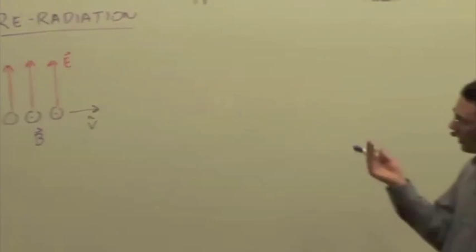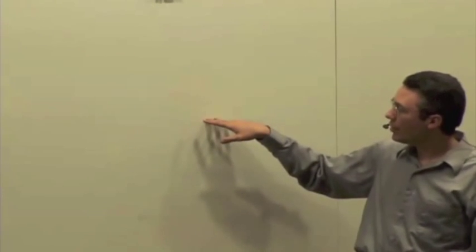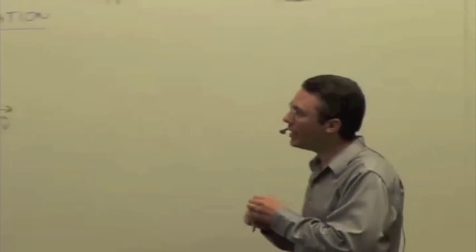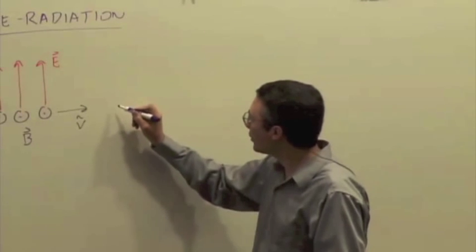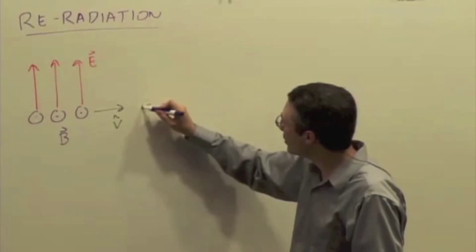And so it's incident on some matter. Matter consists of atoms which have positively charged nuclei and electrons, electron clouds that surround the nucleus. Typically we're talking about electrons that are going to be the re-radiators, but not always. Let's say we just have an electron here.